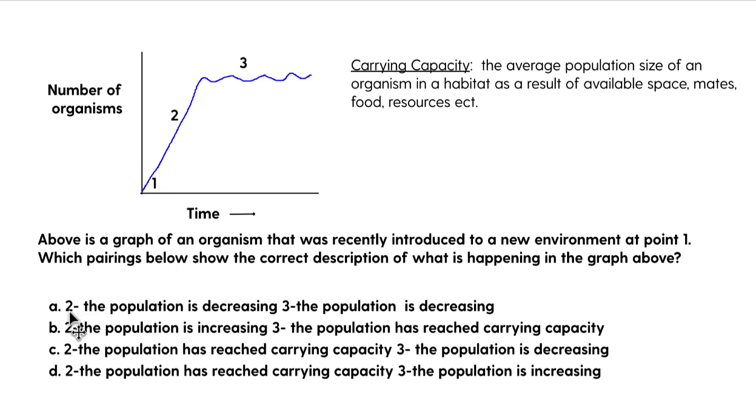And so if you look at this, if we look at A, it says the population is decreasing at point two. Well, no, it's increasing, right? And then point three is going to be the carrying capacity. So if you look at C and D, they're saying point two is carrying capacity. That's wrong. And so the answer is going to be B. Just trying to introduce this notion of carrying capacity here.